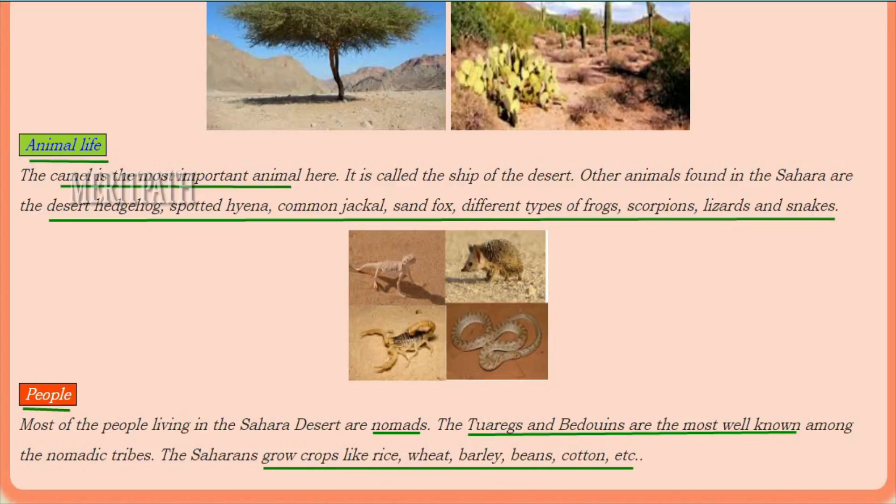People living in the Sahara Desert are known as nomads. The Tuaregs and Bedouins are the most well-known among the nomadic tribes. They grow crops like rice, wheat, barley, beans, and cotton.